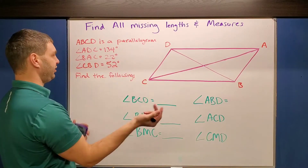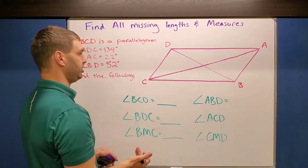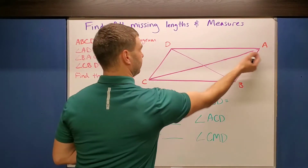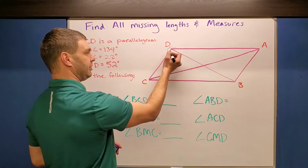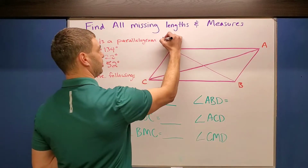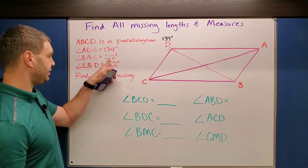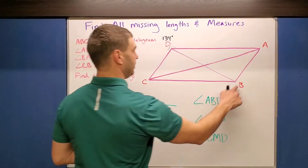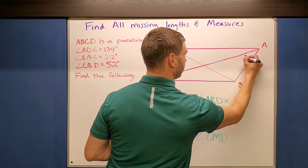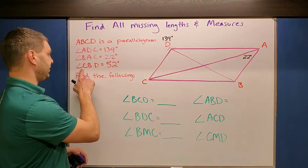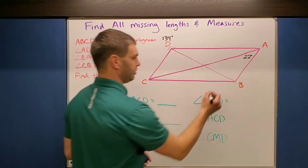It'll probably give you some different measures. For example, here it says ADC is 134. You've got to write that into your picture. So ADC is this entire angle up here. It has two smaller angles. I like to put the whole thing on the outside, so I'm going to put 134 degrees on the outside like that.